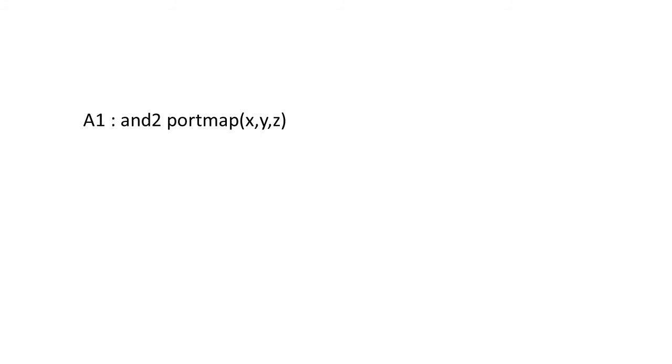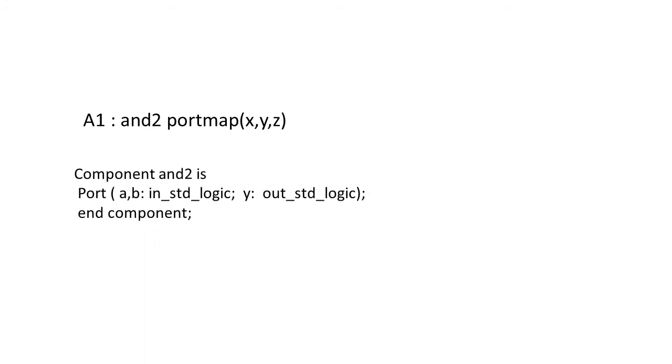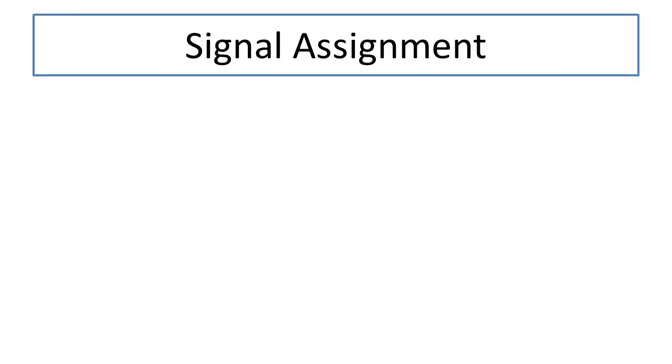An example of instantiation: 'a1: and2 port map(x, y, z)'. Here, 'a1' is the label, 'and2' is the component name. Since and2 was declared with a, b as inputs and y as output, x connects to a, y connects to b, and z connects to y — so z is the output and x, y are the inputs. This statement is known as component instantiation, used repeatedly in structural modeling.